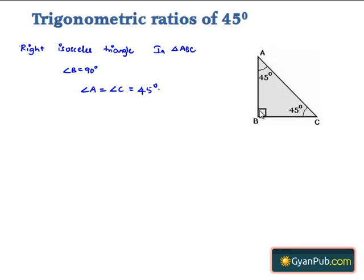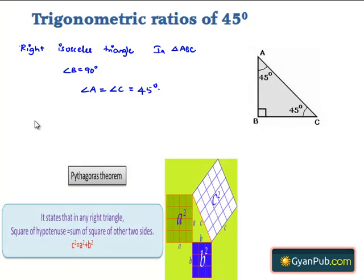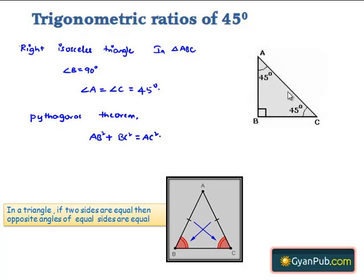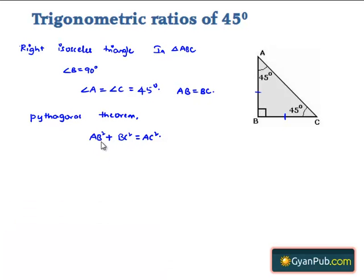Let us apply the Pythagorean theorem in this triangle. Then we get AB square plus BC square is equal to AC square. But as it is a right isosceles triangle, we know that sides opposite to equal angles are equal, so AB is equal to BC. Substituting BC for AB, we get BC square plus BC square is equal to AC square, which implies 2 BC square is equal to AC square.